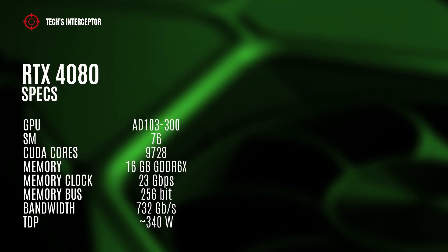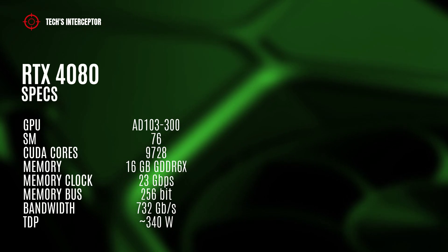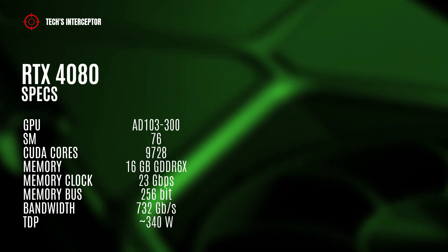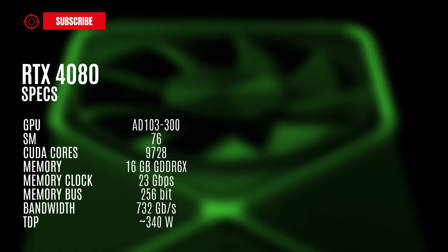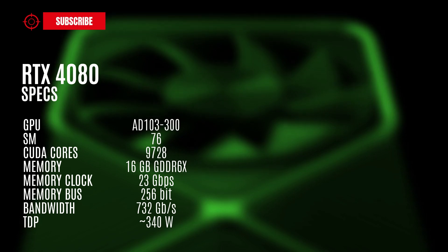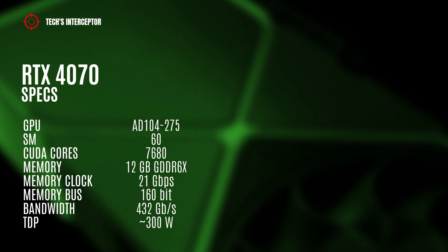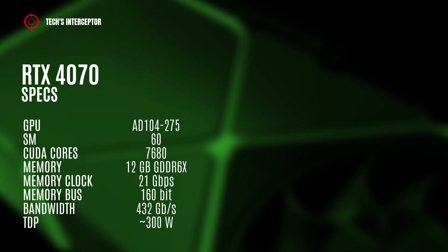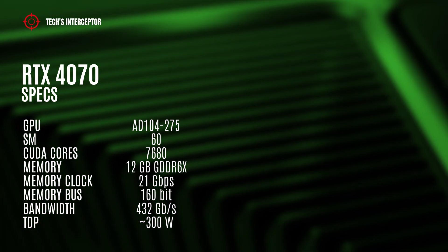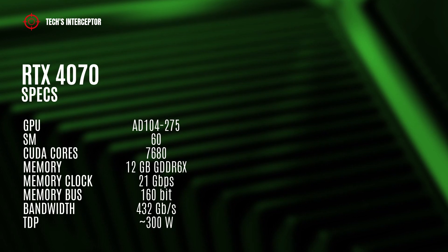The RTX 4080 should feature the AD103-300 with 76 streaming multiprocessors, 9728 CUDA cores, 24 GB of GDDR6X memory operating at 23 GB per second, 256-bit memory bus and 732 GB per second of memory bandwidth, with a TDP of 330 watts. The RTX 4070 should have the AD104-275 with 60 streaming multiprocessors, 7680 CUDA cores, 12 GB of GDDR6X memory operating at 21 GB per second, 160-bit memory bus and 432 GB per second of memory bandwidth.